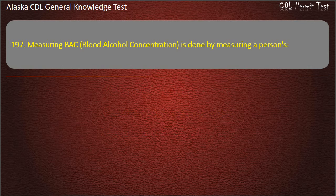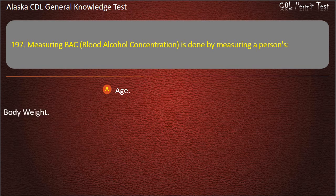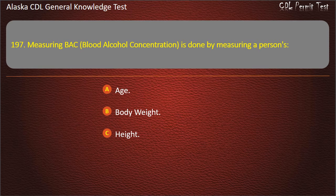Question 197. Measuring blood alcohol concentration is done by measuring a person's age, body weight, or height. Answer: Body weight.